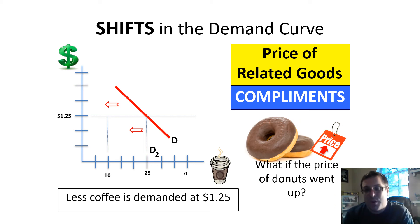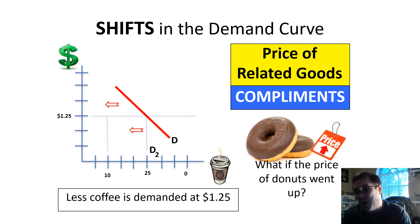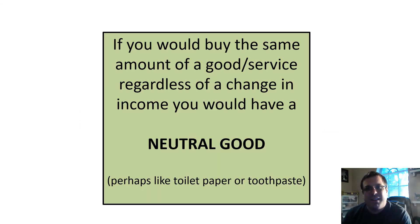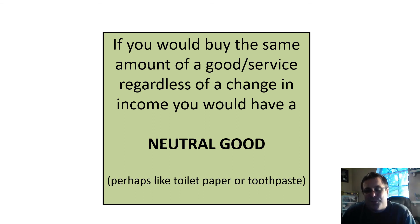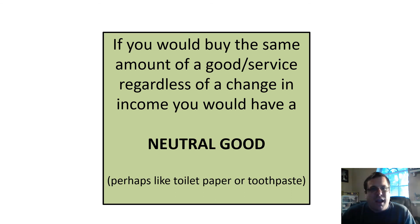With complements, if Whataburger jacks up their cheeseburger prices, demand for their french fries will shift inward — people aren't going there for burgers, so they won't be buying fries either. And finally, there's the concept of a neutral good — something you'd buy the same amount of no matter the cost. The closest real-world examples would be toilet paper or toothpaste, though even those have a limit. It's more of a theoretical idea.